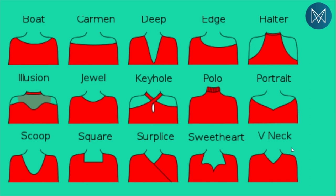You also have a polo neckline, a portrait, a scoop, a square, a surprise, a sweetheart, and a V-neck. These are all the variations of necklines. In design we go wild with our imaginations - there isn't one specific method for doing a thing, you can always experiment. This list is not where it ends; you can go as creative as you can when designing necklines.